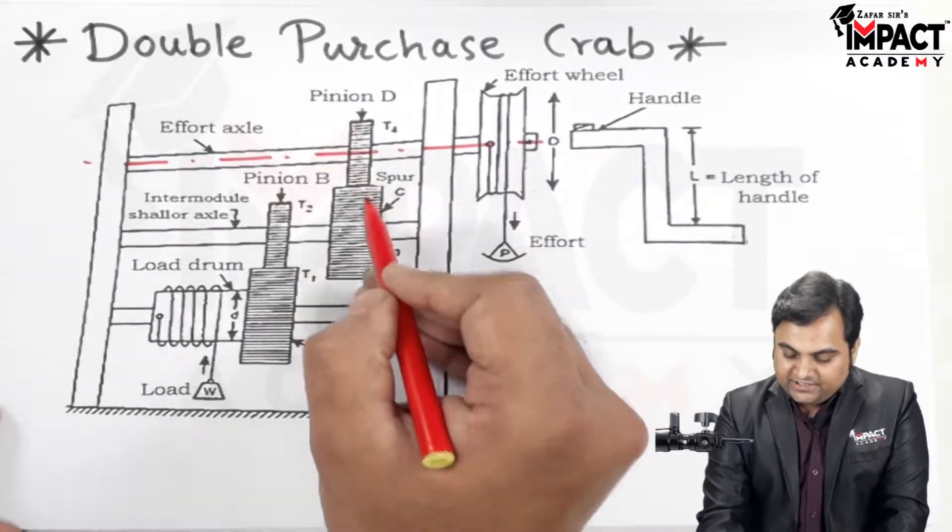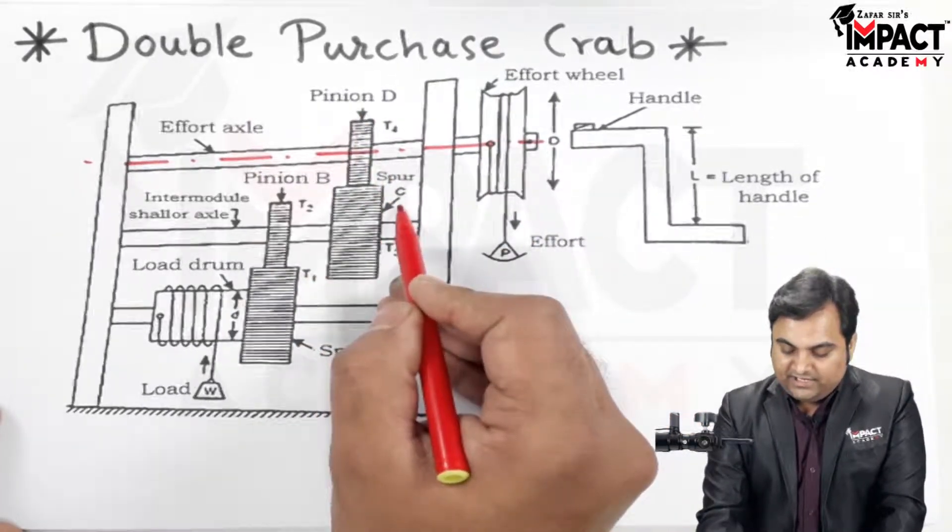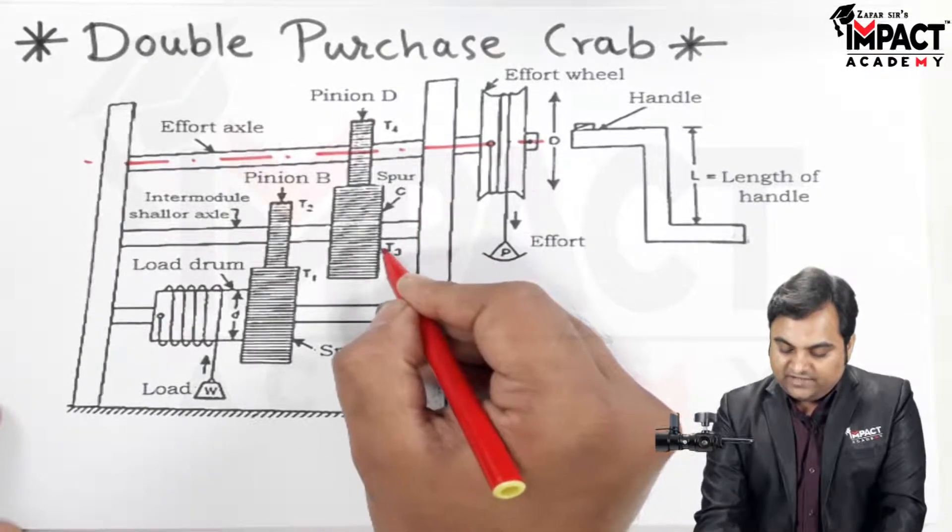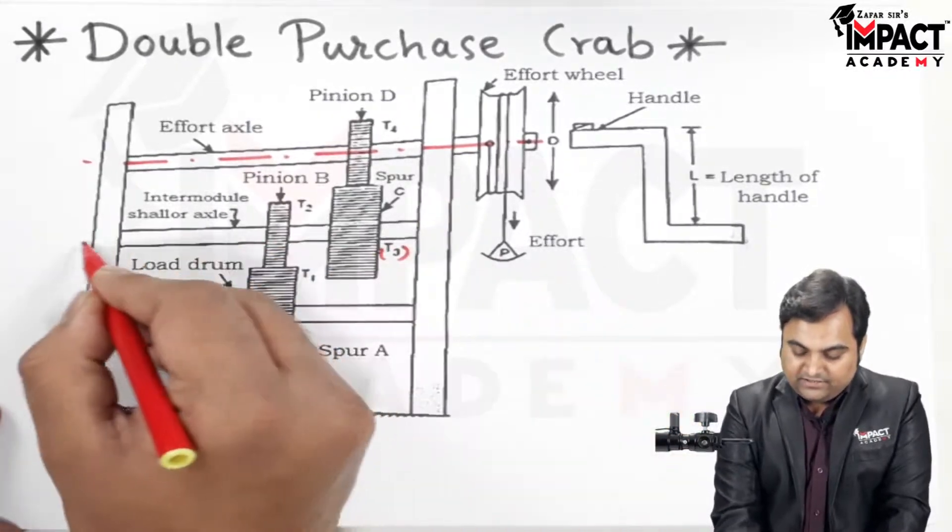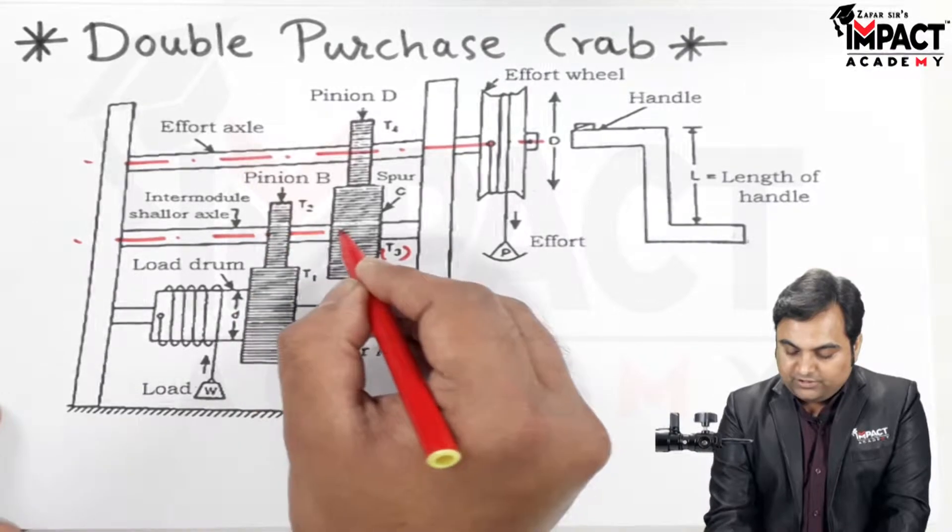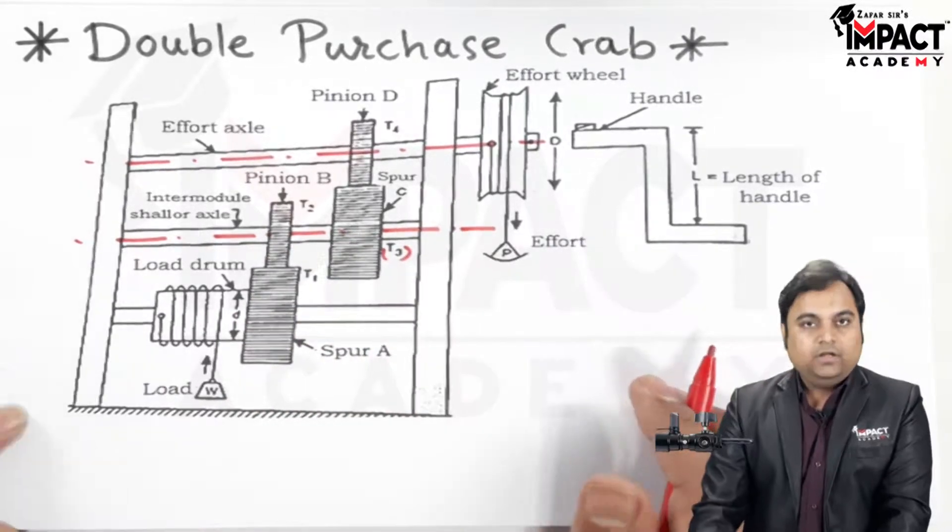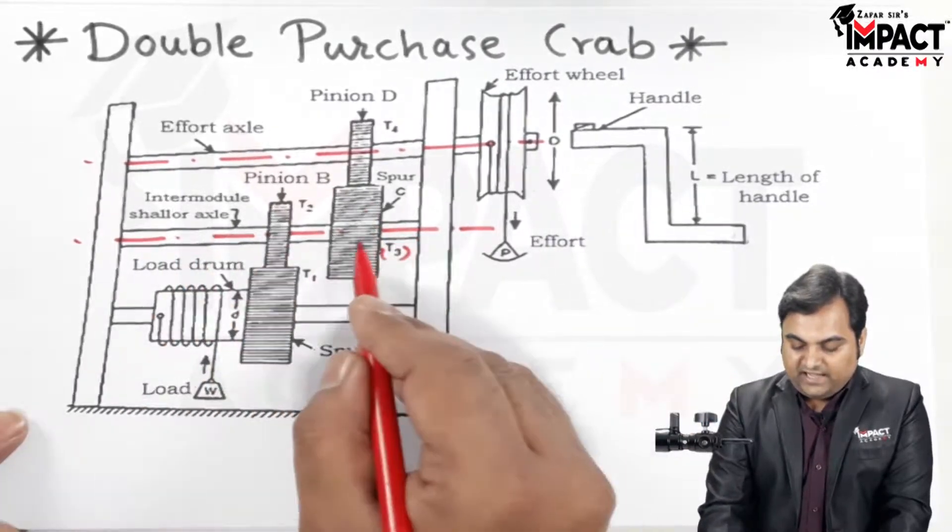Then this pinion D is in mesh with spur C, as we can see here, and it is having number of teeth t3. This is called the intermediate axle or the intermediate shaft. This same shaft carries another pinion which is pinion B.